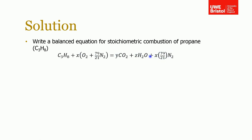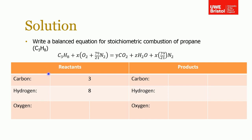To ensure this balances, we've got X times 79/21 nitrogen which is going to come through completely unreacted. Remember, I said to construct a table with your reactants on one side and your products on the other side.